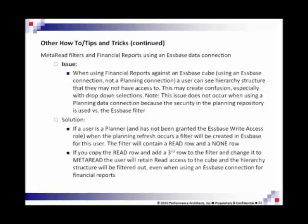You can see the structure, but that doesn't mean you can see the data — you can just see the structure. So if you're head of sales in the east and you can see west, south, north, et cetera, and you selected west and ran the report and you weren't allowed to see that, then there's no data integrity issue — you will not be able to see the data — but it could just be confusing from an end-user perspective.